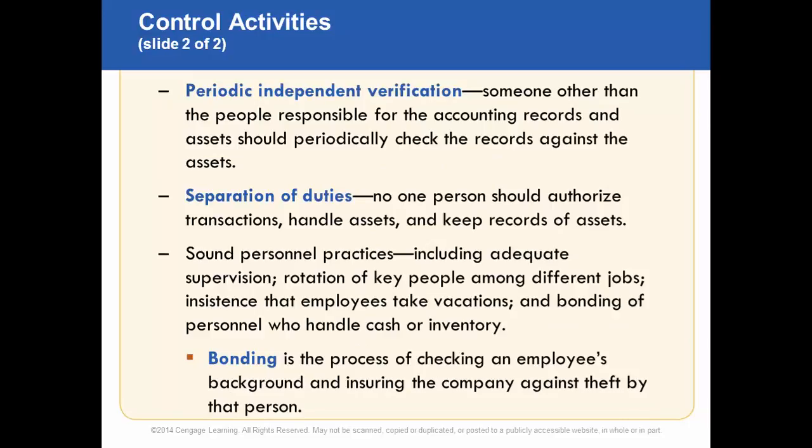There's also periodic independent verification — someone other than the person responsible for the accounting records should periodically check those records. So if my job is to reconcile the bank account, someone should be checking my work to see that I'm reconciling it correctly. There's also segregation of duties, which varies depending on the size of the office — a mom-and-pop store with seven employees versus Big Y with hundreds of employees. But the important aspect is that no one person should authorize transactions, handle the asset, and keep the records.